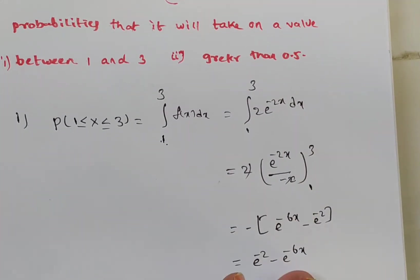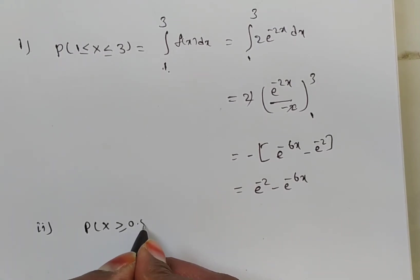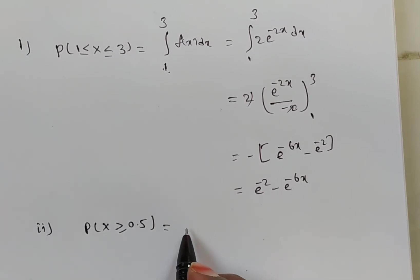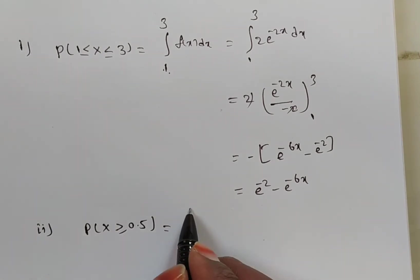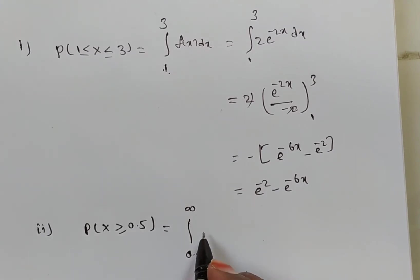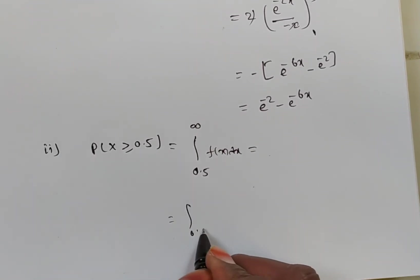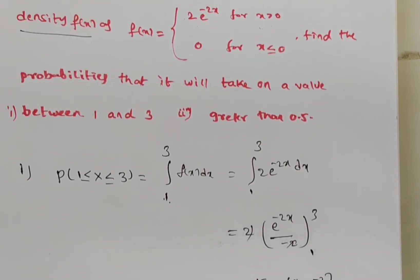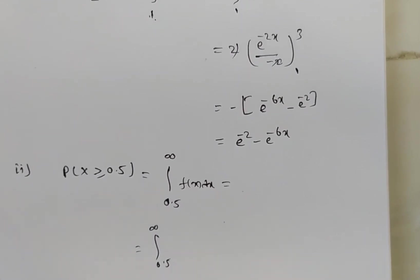For the second problem, we need P(X ≥ 0.5). For a continuous random variable this means the integral from 0.5 to infinity of f(x) dx. Since no upper limit is given, the default upper limit is infinity. For x greater than 0, including 0.5 to infinity, the function is 2e^(-2x).